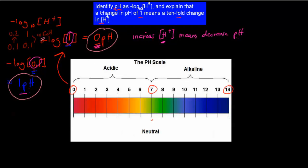That's what this dot point was all about: identify pH as the minus log of the concentration of hydrogen, and explain that a change in pH of 1 means a tenfold change in concentration.